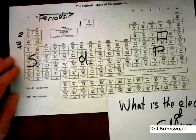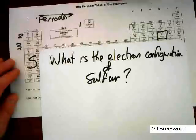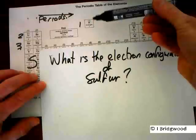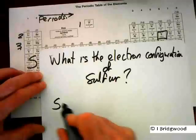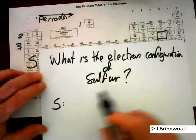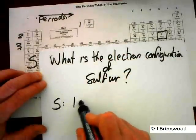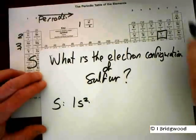So let's count to get to sulfur. We're going to start in the first period, and that comes in the S block, so we can say it's going to be 1S, one, two. We've covered those.